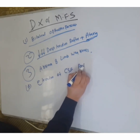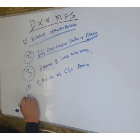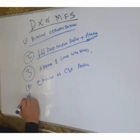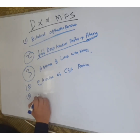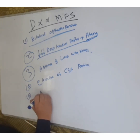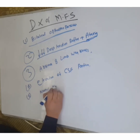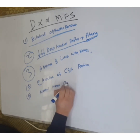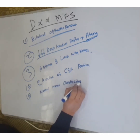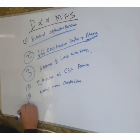The fourth step is elevation of CSF protein — the CSF protein is elevated. Additionally, nerve conduction is normal in Miller Fisher Syndrome; the nerve conduction studies are normal.